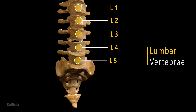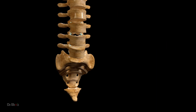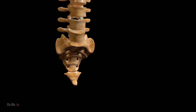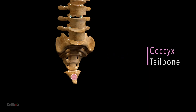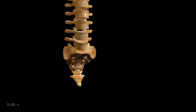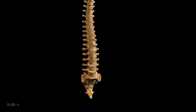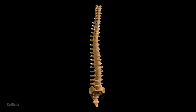The vertebral column can be divided into five main regions: the cervical vertebrae, thoracic vertebrae, lumbar vertebrae, sacrum bone, and coccyx tailbone. Each of these regions has unique characteristics that contribute to the overall function of the vertebral column. Let's take a closer look at each of these regions.